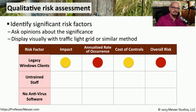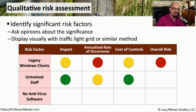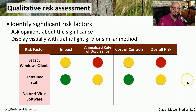We can perform additional qualitative analysis on other risk factors such as untrained staff. Maybe this has a very low impact, has a medium level annualized rate of occurrence, a low cost of controls, which puts our overall risk somewhere in the medium level.